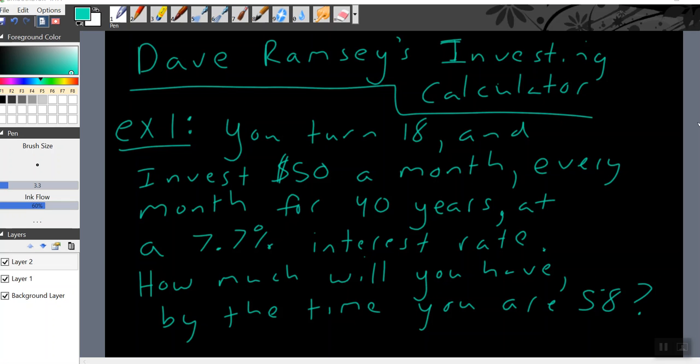So let's take what I think is the most feasible real life example I can ever give you. Example one, you turn 18 and you're going to open up a Robinhood account or an Ameritrade account or an E-Trade account, some sort of free investing account. And you're going to invest $50 a month every month for 40 years into our Vanguard ETF, the one we just learned about, at a 7.7% interest rate. How much will you have by the time you are 58?